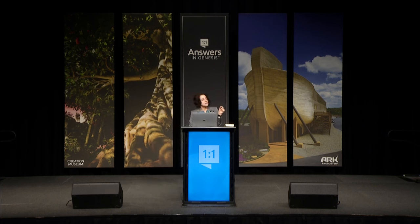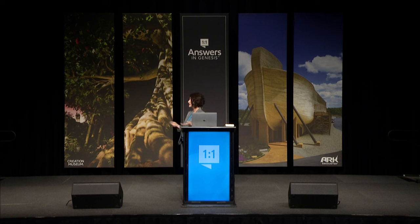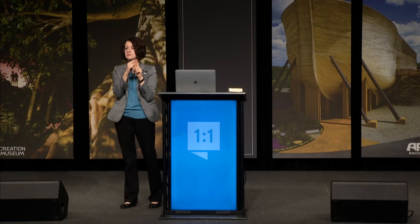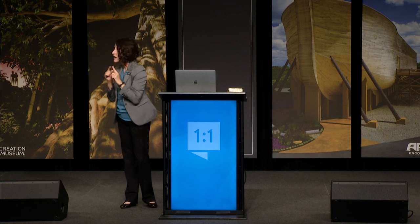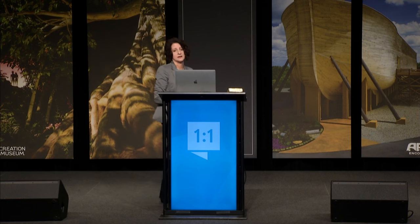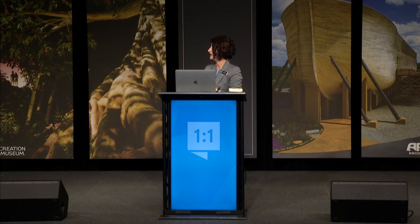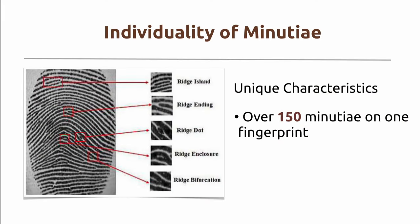On one fingertip — from that crease to the tip of your finger, nail to nail — you have over 150 points of minutia on just one fingerprint. That is unique to you and no one else in the entire world. The location of your characteristics is special. There are various types such as ridge island, ridge ending, and ridge dot — these little tiny characteristics make you unique. There are more types than these, but these are the most common.